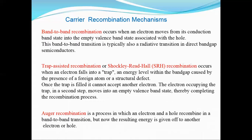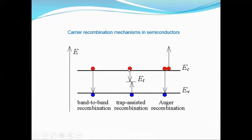The next process is trap-assisted recombination, also called Shockley-Reed-Hall recombination. This recombination occurs in two steps: first, an electron in the conduction band falls into a trap, whose energy level is caused by a structural defect or the presence of a foreign atom. In the second step, the electron from the trap falls into the valence band, combining with the hole and completing the recombination process. This is called trap-assisted recombination.